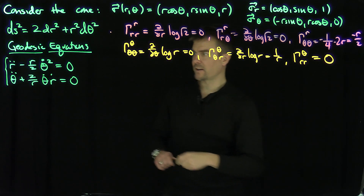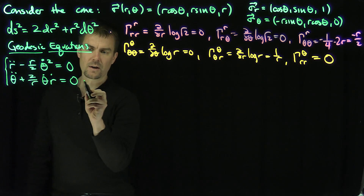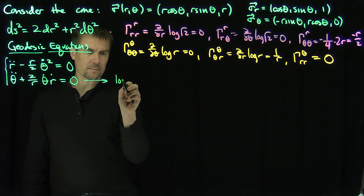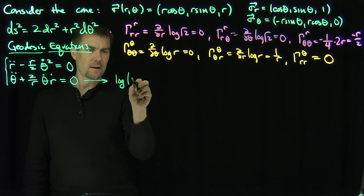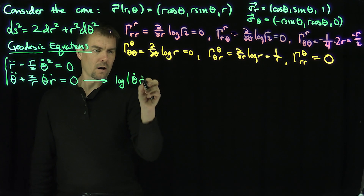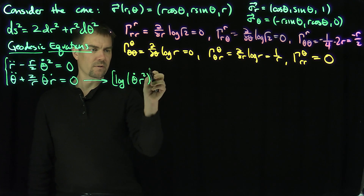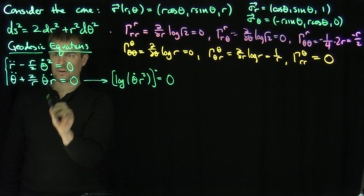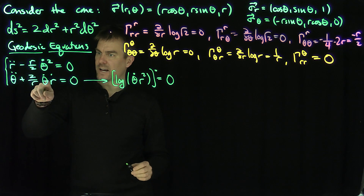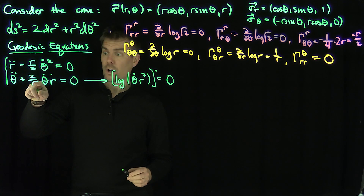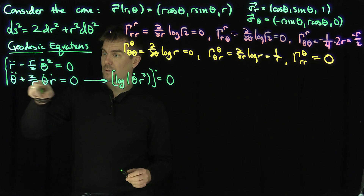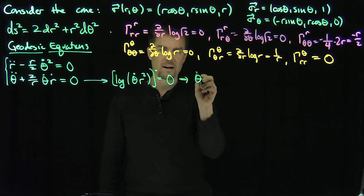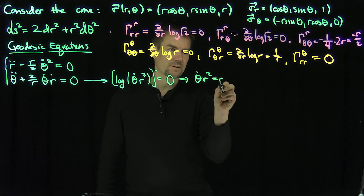The second equation can be simplified dramatically in terms of a conservation law. This equation tells me that the logarithmic derivative of θ̇ r² is zero, because it's really θ̈/θ̇ + 2ṙ/r = 0. So in other words, θ̇ r² is a constant c₁.